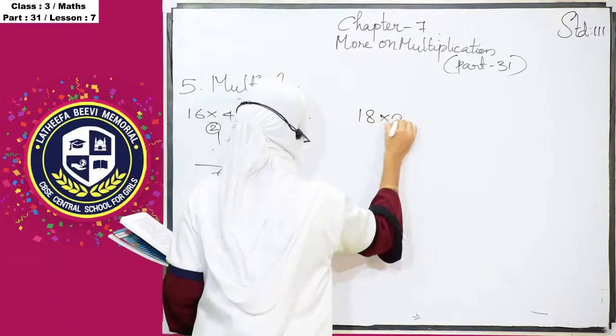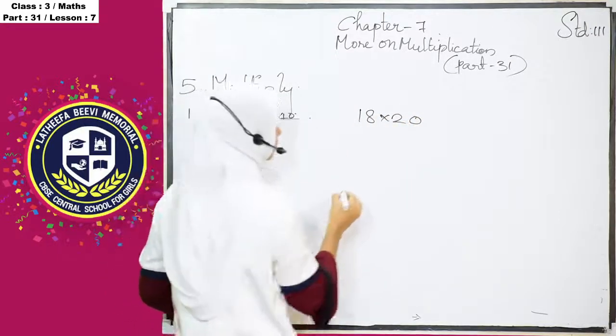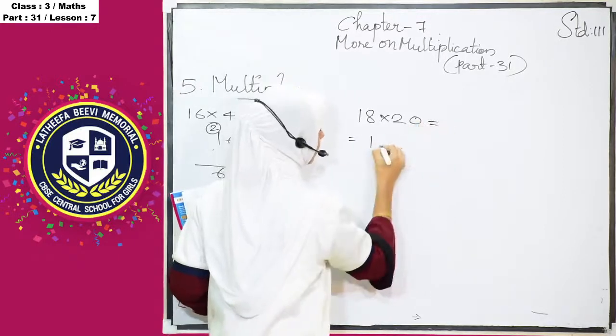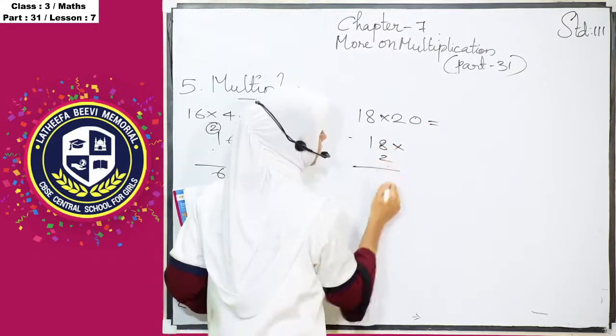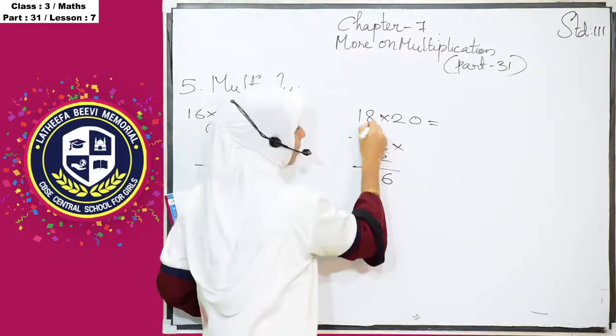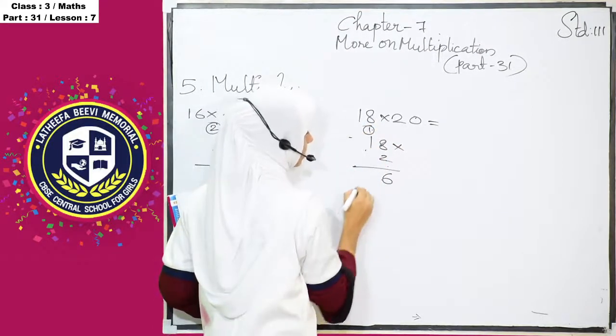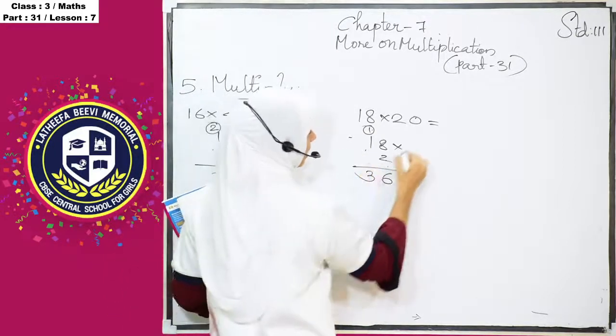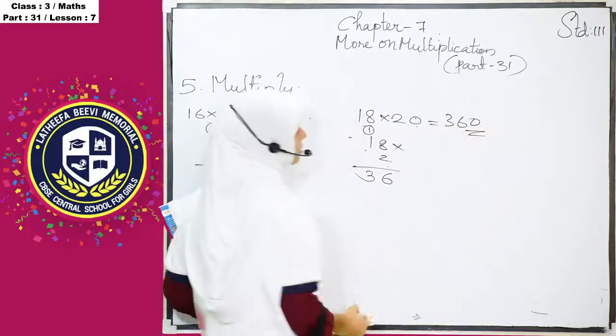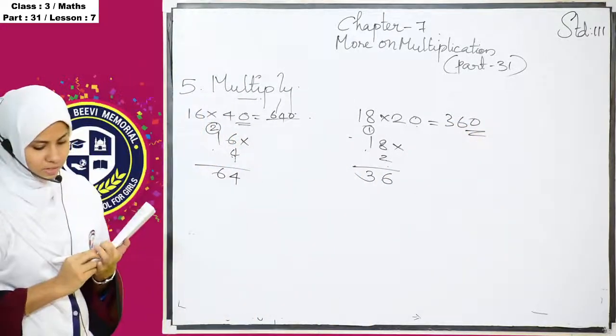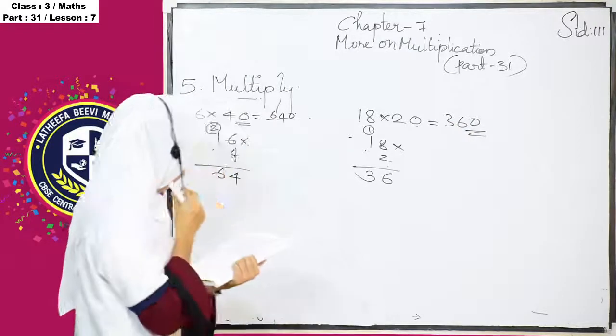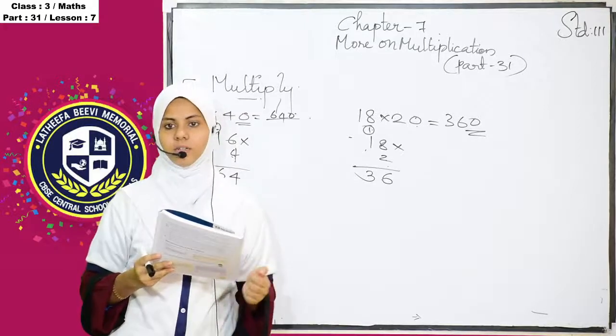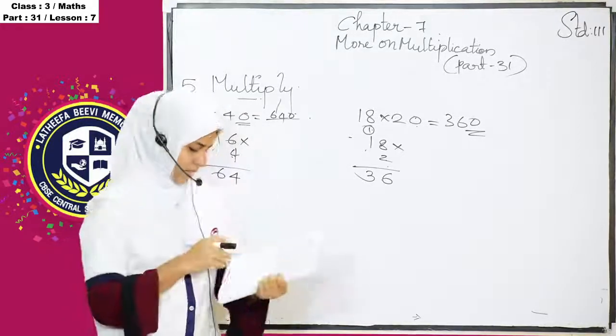18 into 20. 18 into 20. And then, you can do that. 18 into 2, 6, 2, 8's are 16. 1 is carry over. 2, 1's are 2 plus 1, 3. 2, 1's are 2 and plus 1, 3. And 360. Add this 0 also. 360 is the answer. So, this is the way how to multiply the two-digit number by another two-digit number.